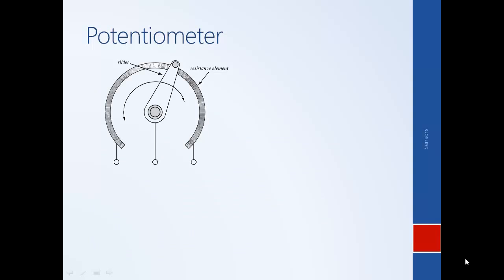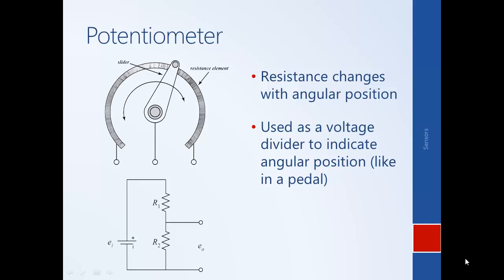A common, inexpensive type of sensor used in many applications is the potentiometer. With the potentiometer, the mechanical quantity of position is changed into a change in resistance, and it can be used as a voltage divider to generate a voltage proportional to the change in position. One automotive application is to measure the position of a pedal. Looking at the figure, we have a resistance element with total resistance R. As the slider moves, it changes the amount of resistance on each side of the slider, and if we apply a voltage across the potentiometer, the output voltage changes as the slider changes.